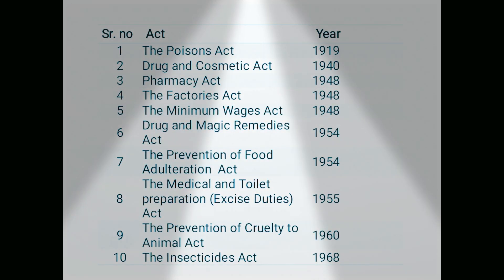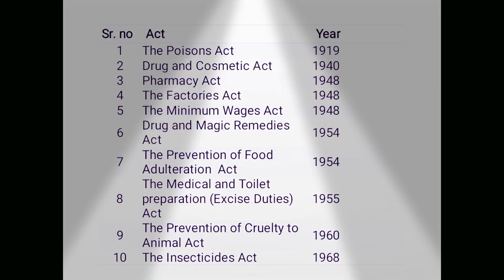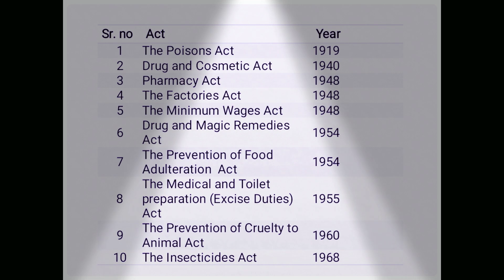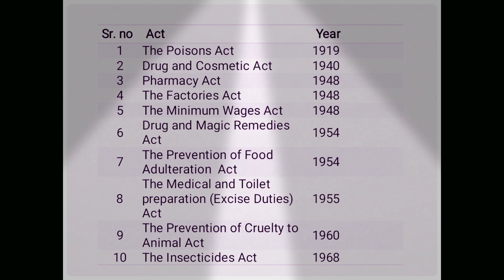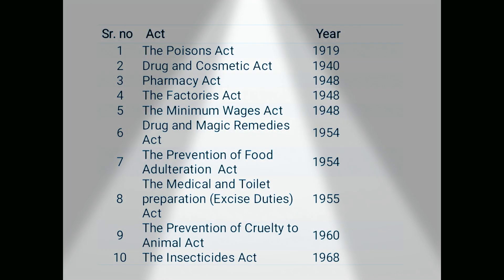The years can be asked in various competitive examinations. In this video I have arranged all the acts in accordance with the year. The first one, the Poison Act, was enacted in 1919. The Drug and Cosmetic Act in 1940. The Pharmacy Act, the Factories Act, and the Minimum Wages Act — all these three acts were implemented from 1948.